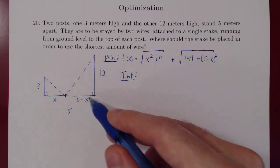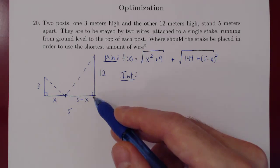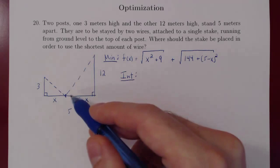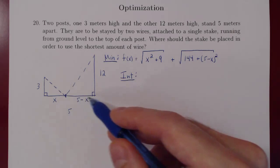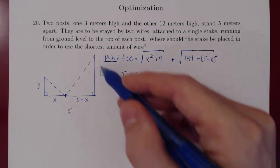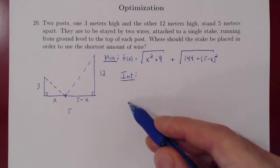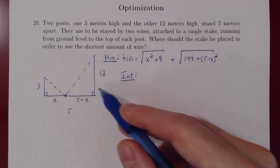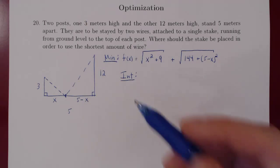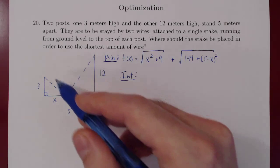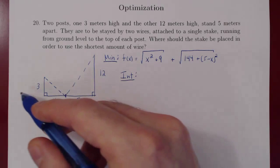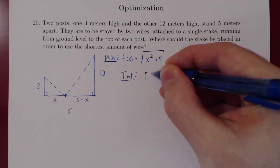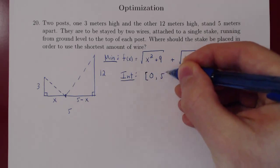x could go up to 5. Could we possibly obtain a minimum if x is bigger than 5? By the same argument, if you reflect about that point, the length of the longer piece of wire stays the same, but now the length of the shorter segment is much longer. So a minimum for the total wire length cannot be achieved if x is negative or bigger than 5. Our interval for x values ranges from 0 to 5.